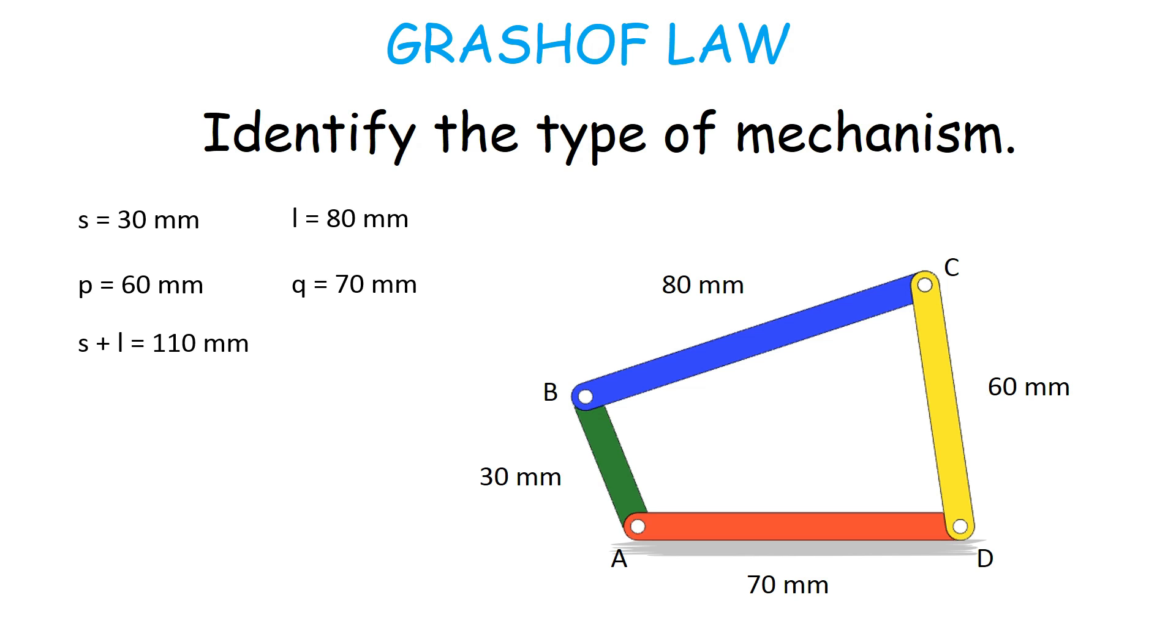Therefore, the sum of the lengths of the shortest and the largest link equals 110 mm and the sum of the lengths of the other two links equals 130 mm.